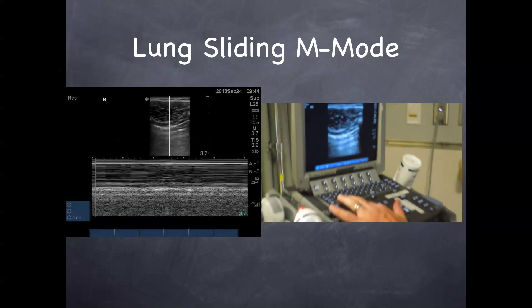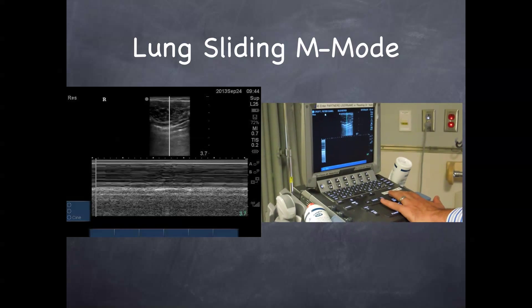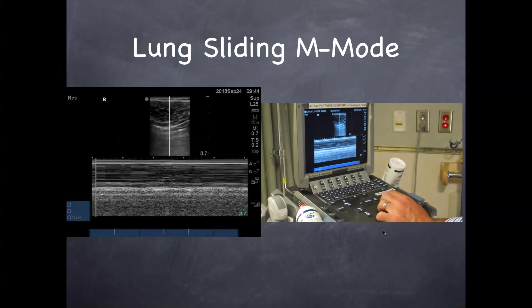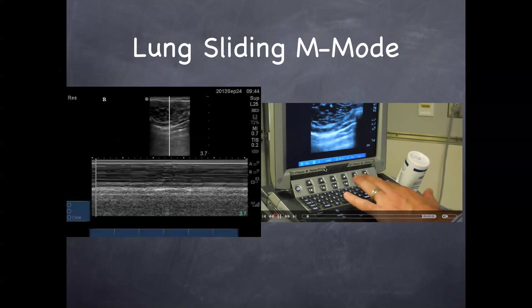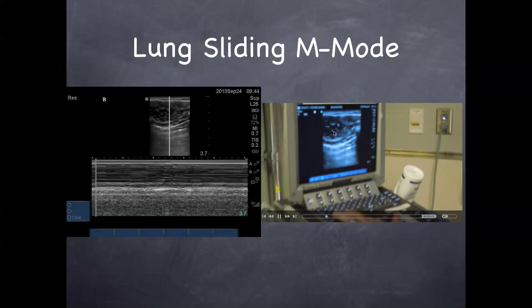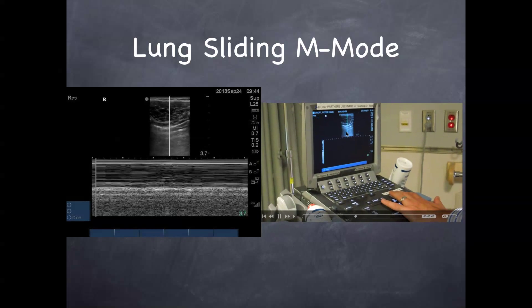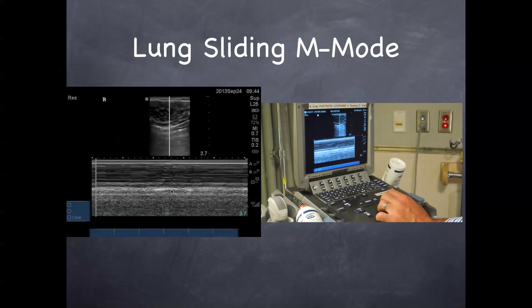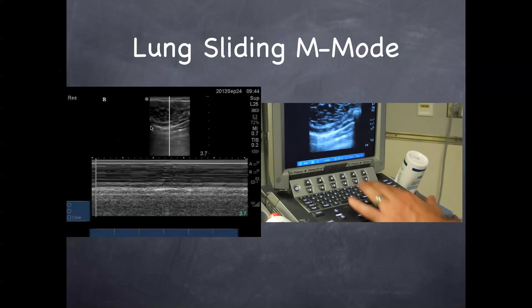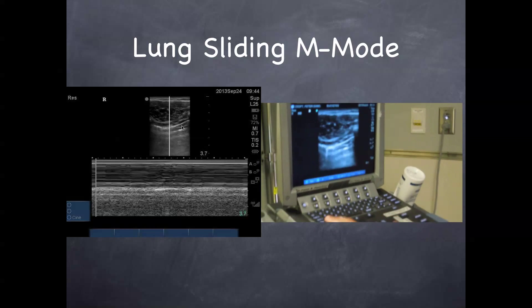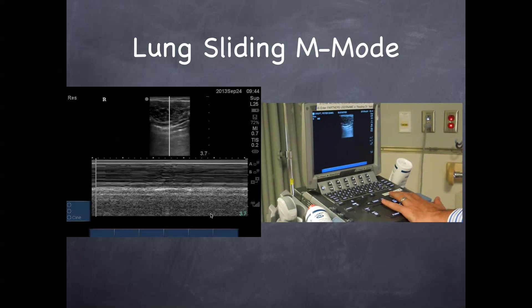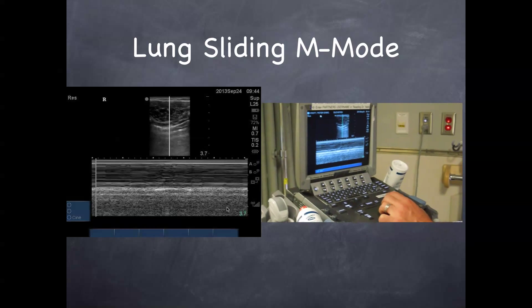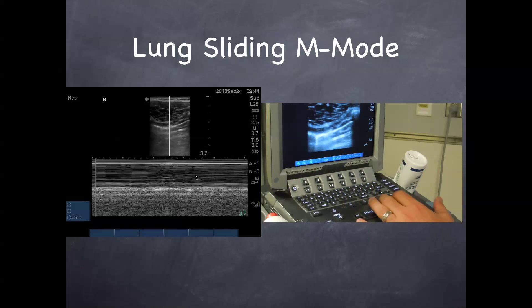If you want to confirm with M mode, click M mode. Here's Scott doing this on the machine, clicking M mode, getting his vertical line where he wants it. That vertical line corresponds to the B mode image. As you can see, the pleural line is here on M mode and here in B mode. 3.7 corresponds to 3.7, so every structure here corresponds to a structure there. This is called your seashore sign because it looks like a beach with waves coming in.